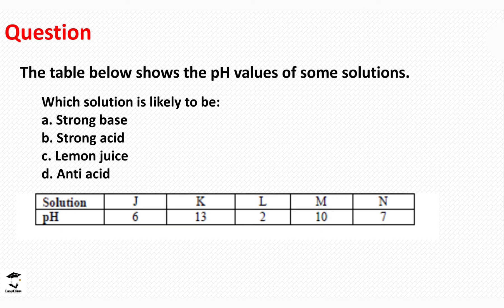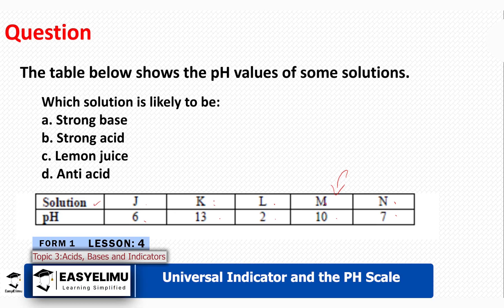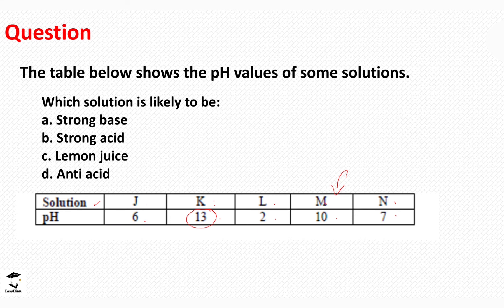Let's look at an example. The table shows pH values of solutions J, K, L, M, and N, with pH values of 6, 13, 12, 10, and 7 respectively. Which solution is likely a strong base? Since strong bases have pH 11 to 14, the largest pH in the table is 13, so the strongest base is solution K. For a strong acid, strong acids have pH between 0 and 3, and the lowest pH in the table is 2, so L is the strong acid.